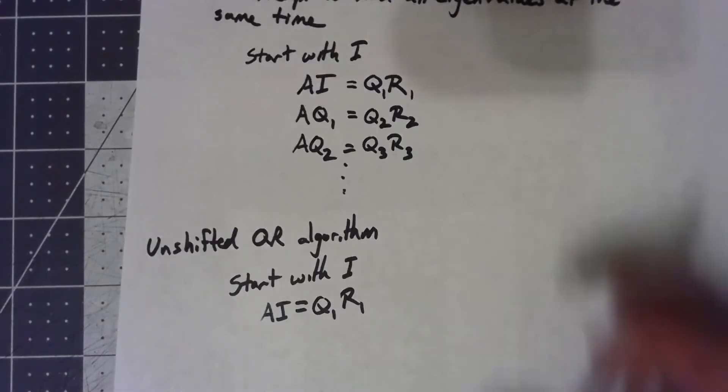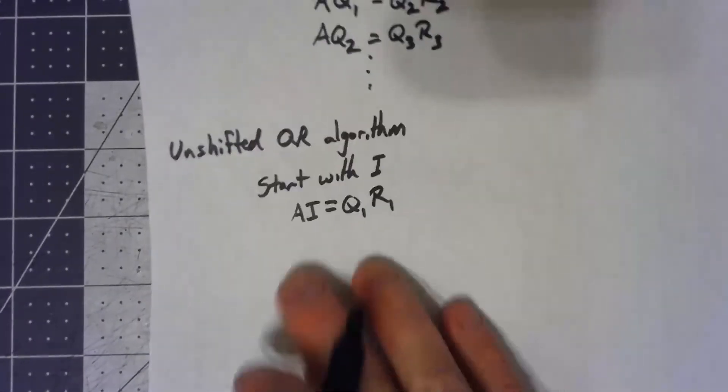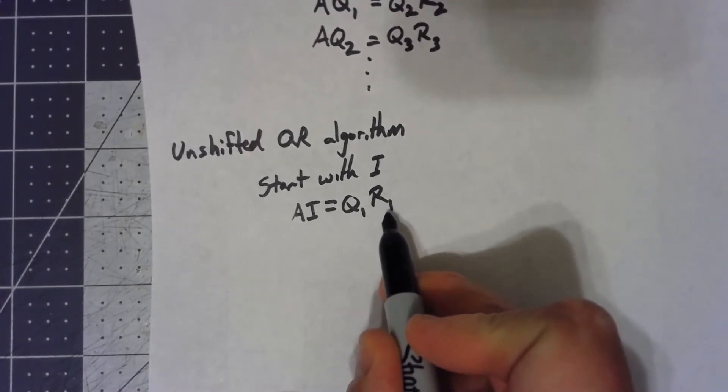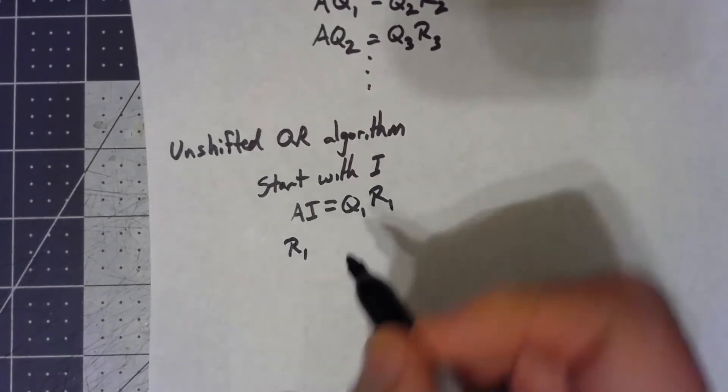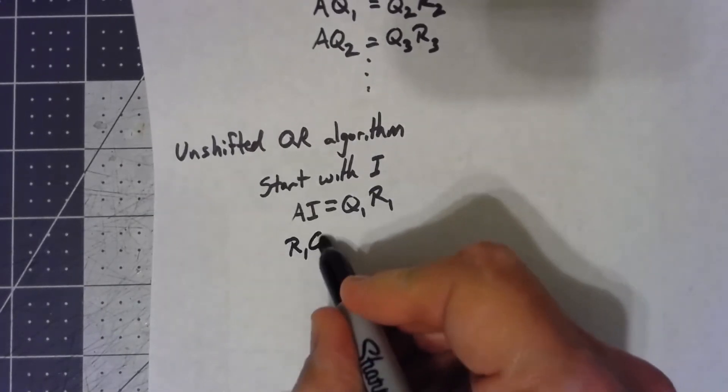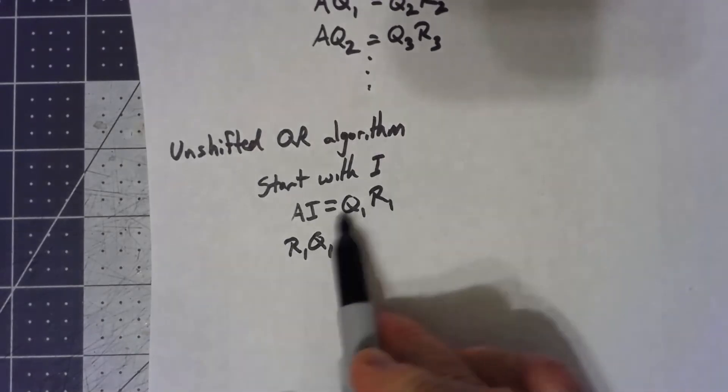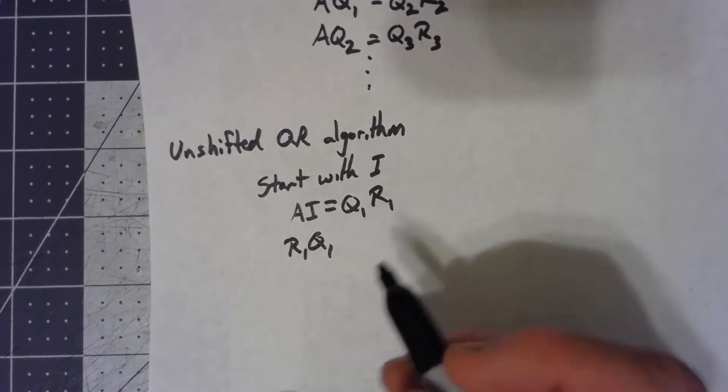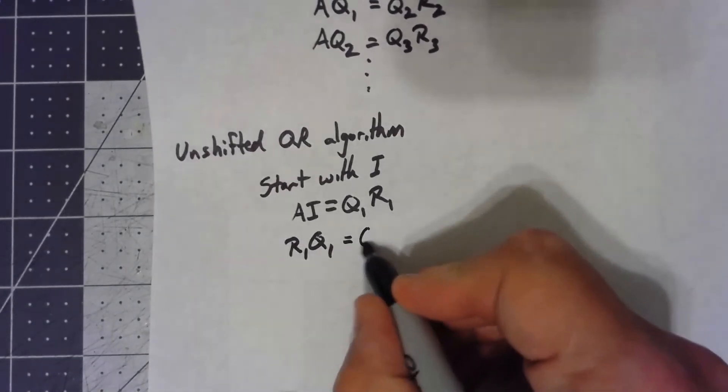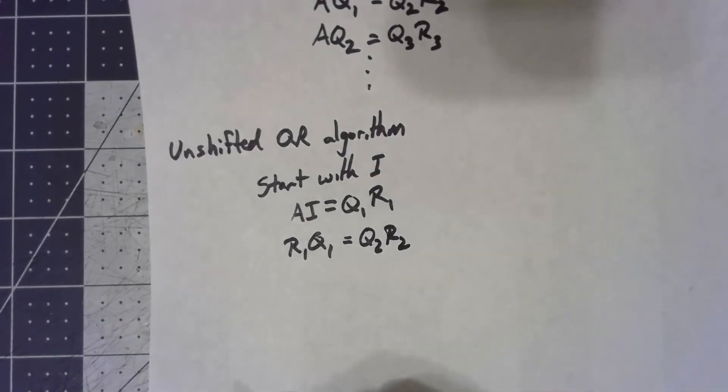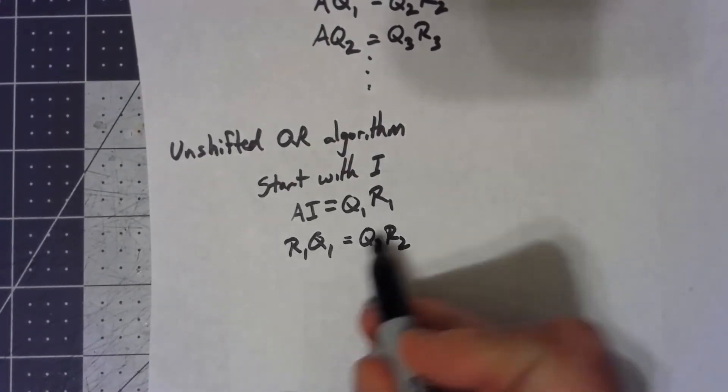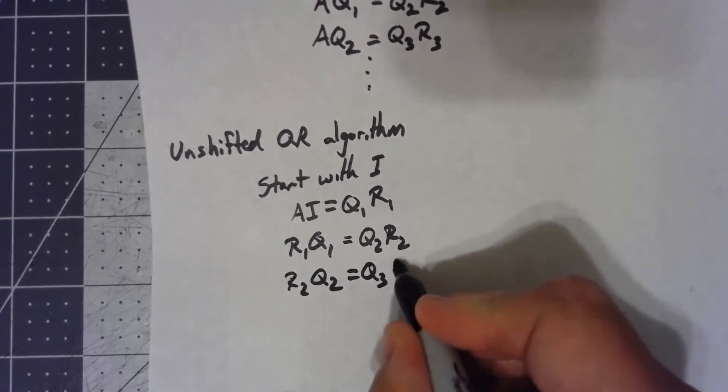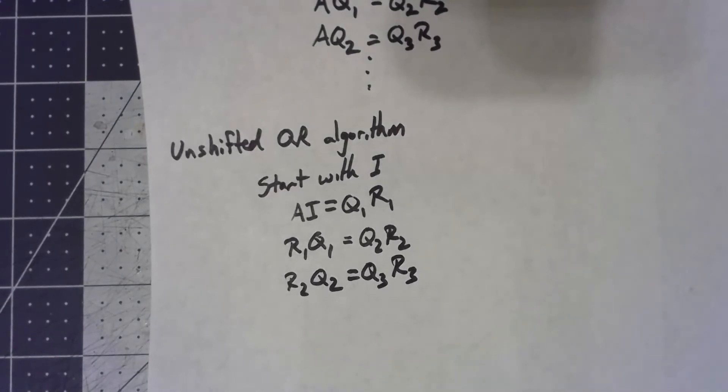But then from there, rather than multiplying by A at each step for my iteration, I'm actually going to multiply by the R. So I'm actually going to take the R1 times the Q1. I actually take them and multiply in the opposite order, which of course with matrices is a different thing I get out. And then I do the QR factorization on this. Again, I multiply this Q by the R2 and so on like that.